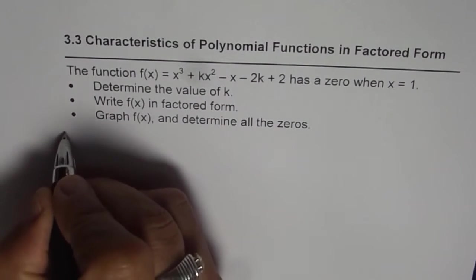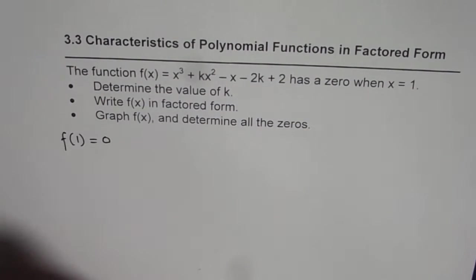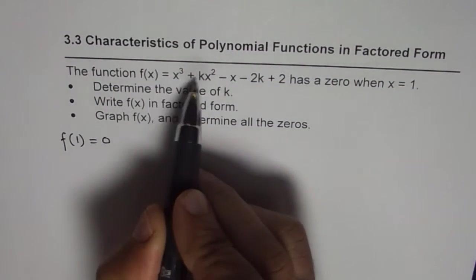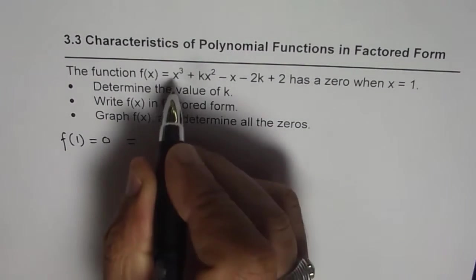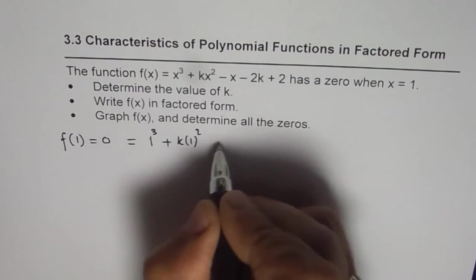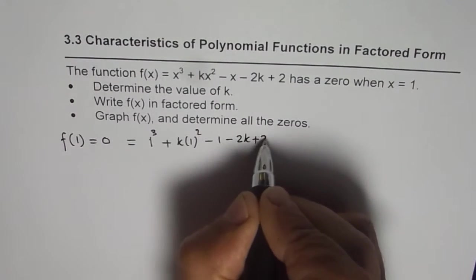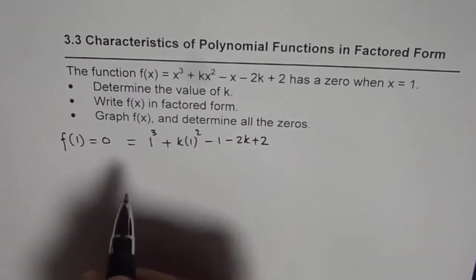So we have f(1) equals 0. It means I should substitute 1 for x. So if I write 1 for x, I get 1 cubed plus k times 1 squared minus 1, minus 2k plus 2. That helps to find the value of k.